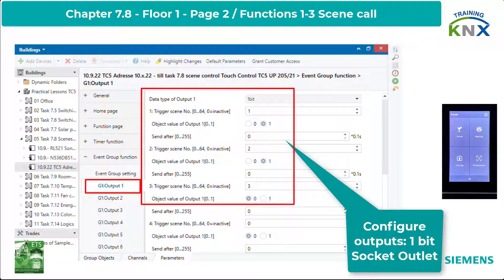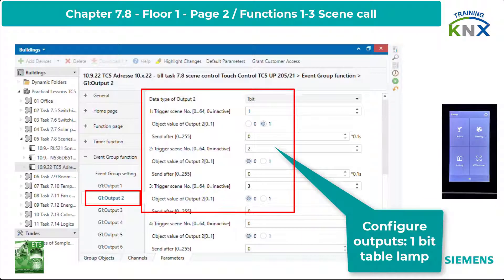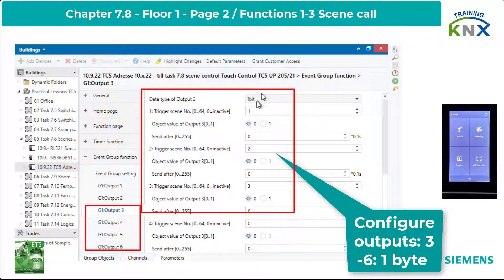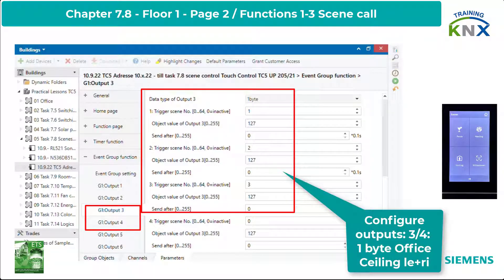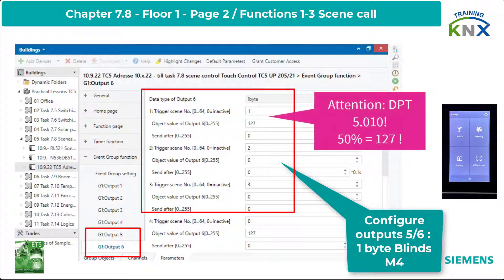I enter the values for the objects as described. I do the same with Output 2, which is 1-bit for the Table Lamp. Outputs 3 to 6 are set to data type 1 byte: 3 and 4 for the Office Ceiling Light, 5 and 6 for the blind. I enter successively the plant control values. Attention with the data point type: it is plain integer 5.010, not percentage 5.001.